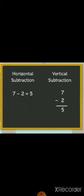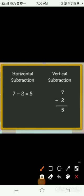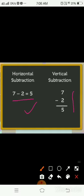In horizontal subtraction, we write the numbers in sleeping line order. As you can see here, the numbers are written in sleeping line order. In vertical subtraction, we write the numbers in standing line order. So this is vertical subtraction and this is horizontal subtraction.